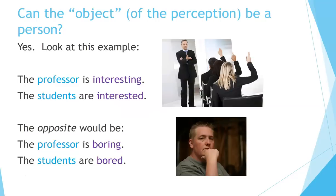Can the object of the perception be a person? Yes. For example: the professor is interesting to the students; the students are interested in the professor. The opposite would be: the professor is boring; the students are bored.